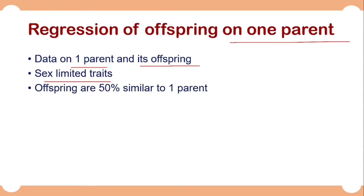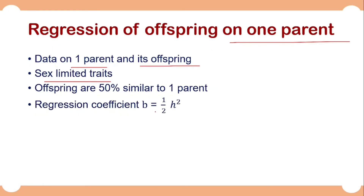As already mentioned, offspring are 50% similar to one parent. This means the regression coefficient B is equal to half the heritability, and therefore heritability will be twice the regression coefficient. So it can be written as: heritability = 2B.